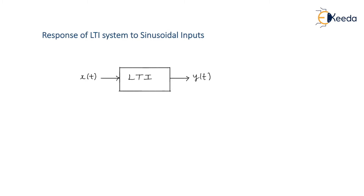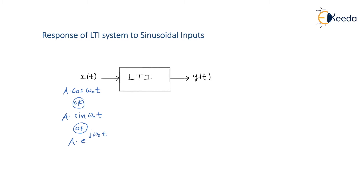Now we are interested in how an LTI system responds to sinusoidal inputs. Possible inputs include A·cos(ω₀t), A·sin(ω₀t), or A·e^(jω₀t). All of these are considered sinusoidal signals — sine and cosine are not very different, there is only a phase shift; both oscillate between a maximum positive and maximum negative value.